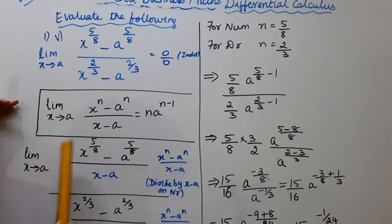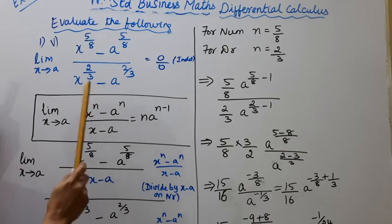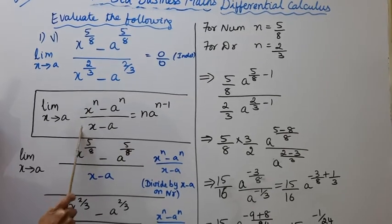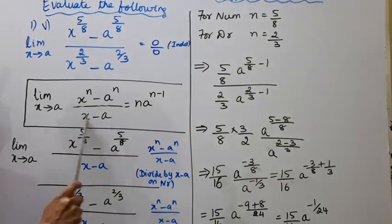Limit X tends to A. The indeterminate form has X power n, but not X minus A in the denominator. We need to match it to the formula structure with X minus A.